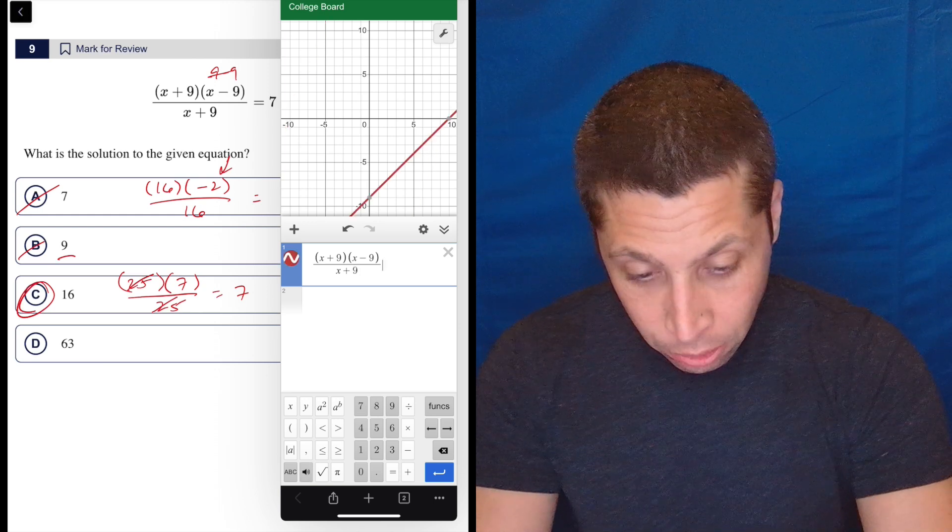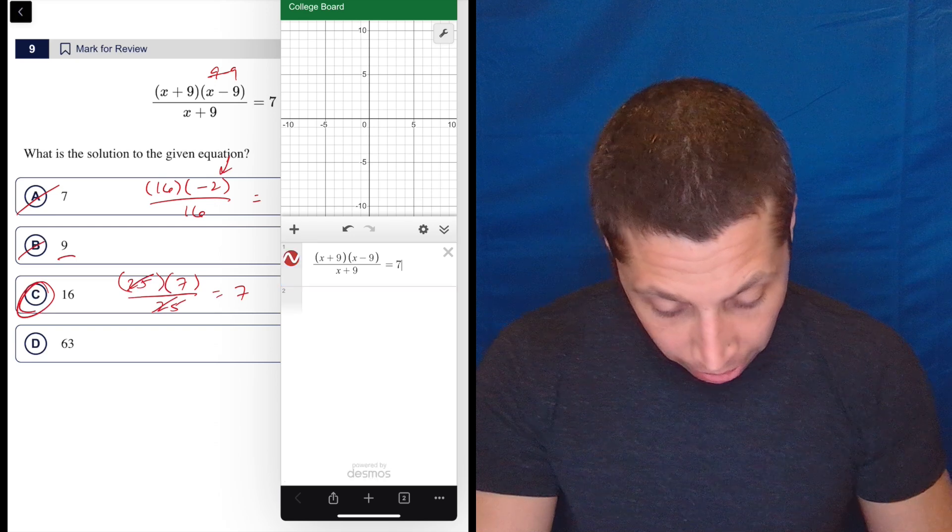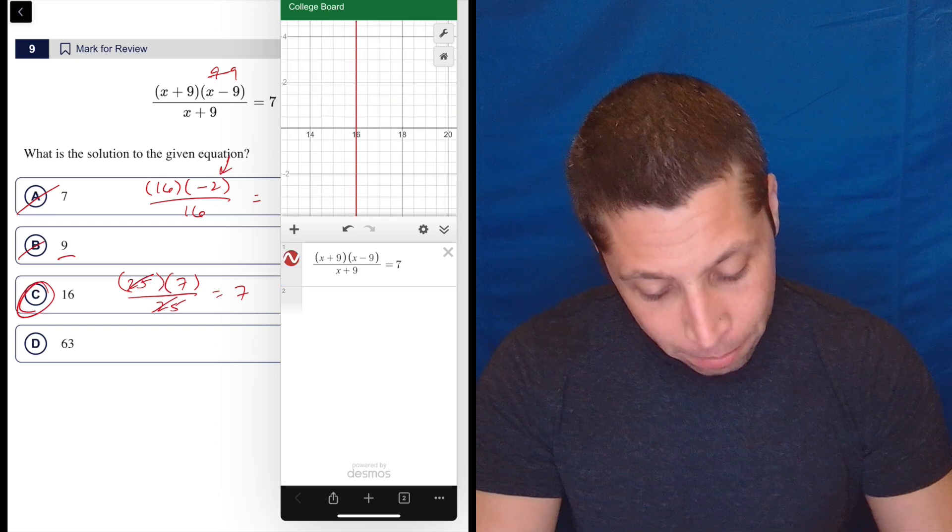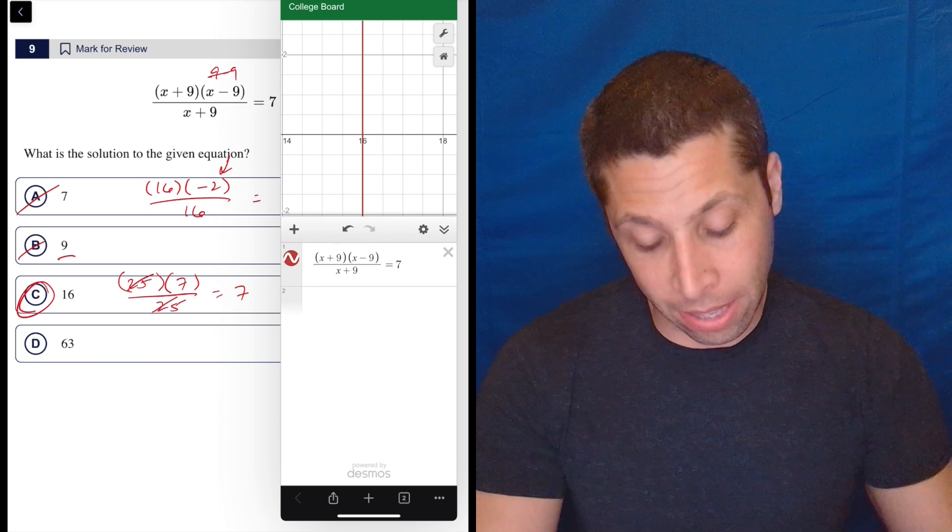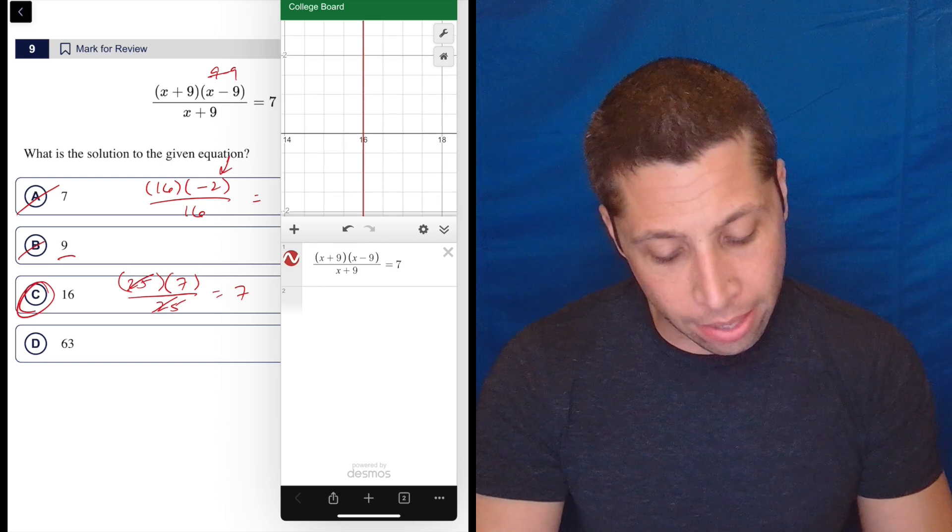So here, if I do equal 7, I should get, there it is. Now, it doesn't let me tap it, but it's clearly 16. I don't think it lets me tap it because there's division in this, but normally you can tap that and see the point.